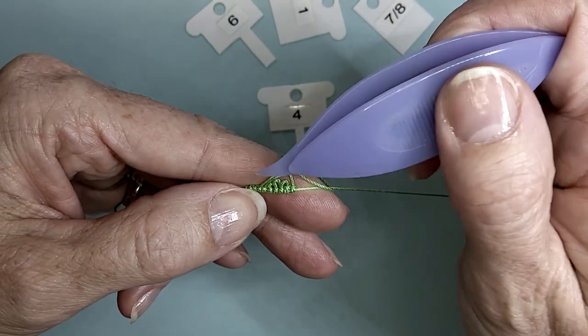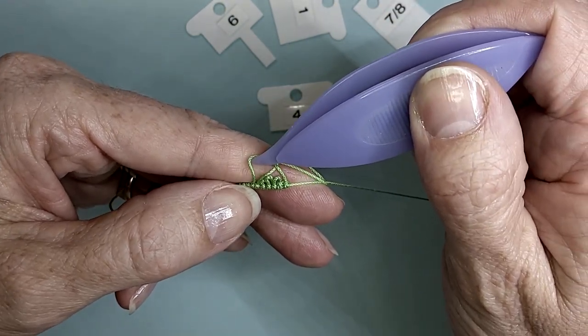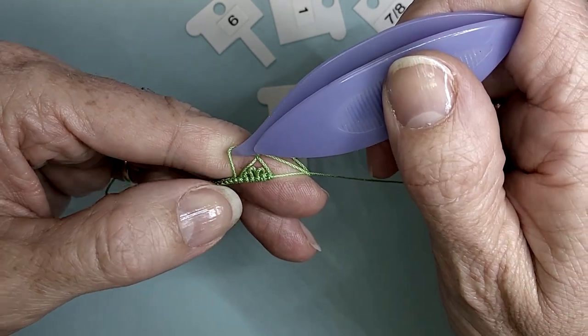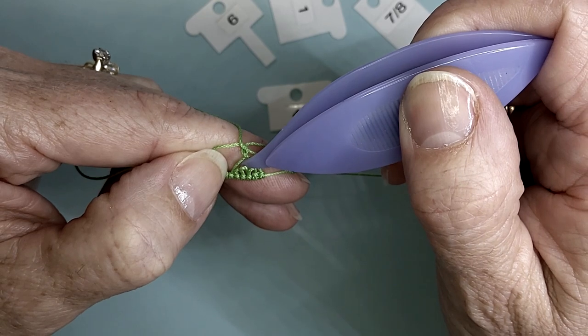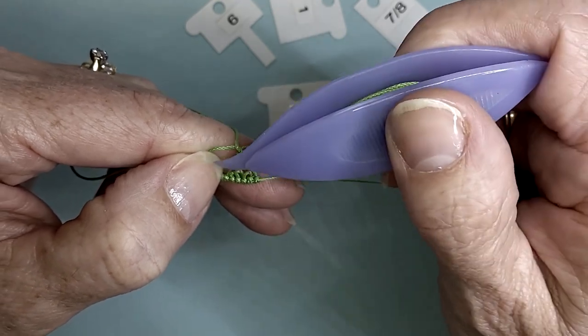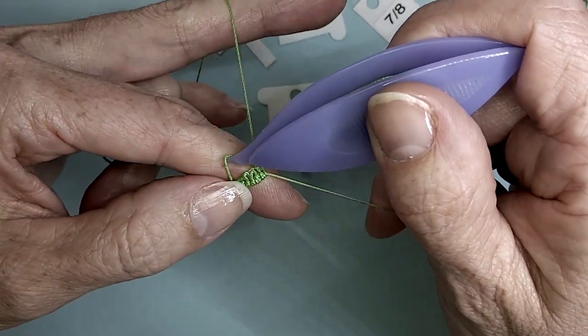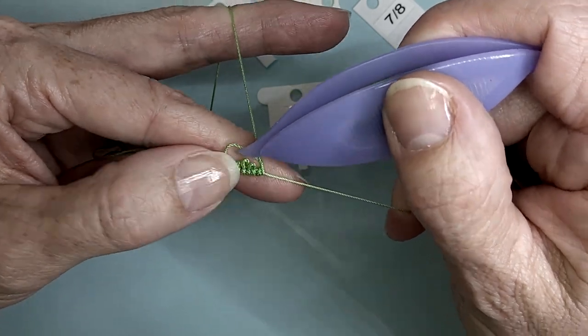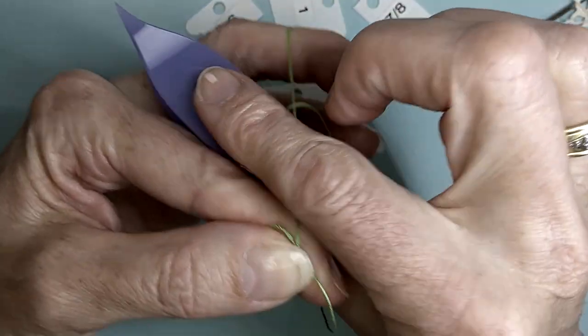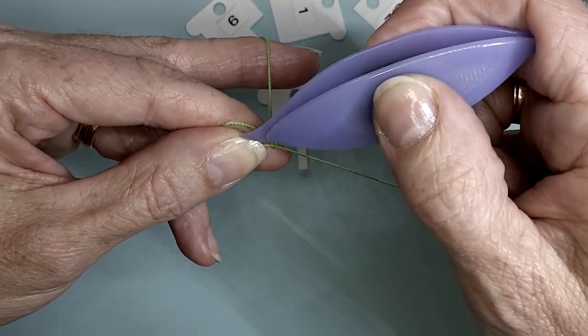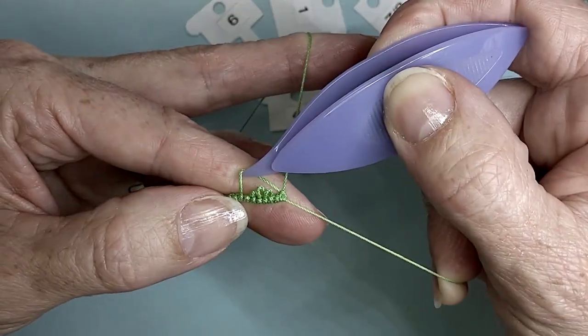Use the pick on your shuttle to hold the top leg of the picot up while you pull the bottom leg of the picot down with your thread. Work the second half of the stitch to secure the wide picot.